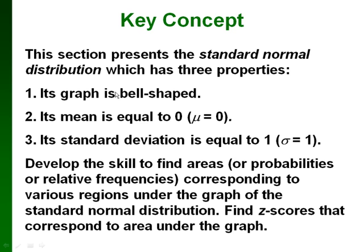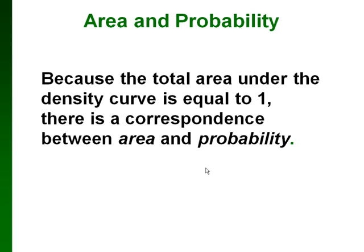Here are some properties about the standard normal distribution. Standard normal means that the mean is 0, so mu is equal to 0, and the standard deviation is equal to 1. What helps us find probabilities with normal distributions is that the area under the curve — under that bell-shaped curve — is equal to 1.